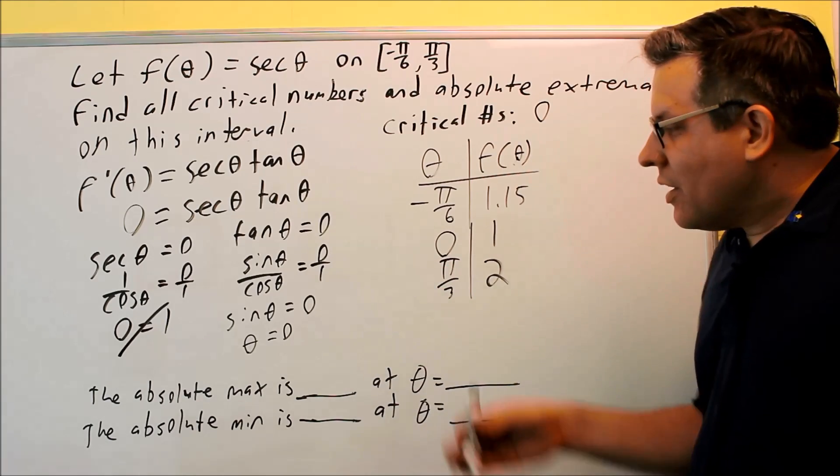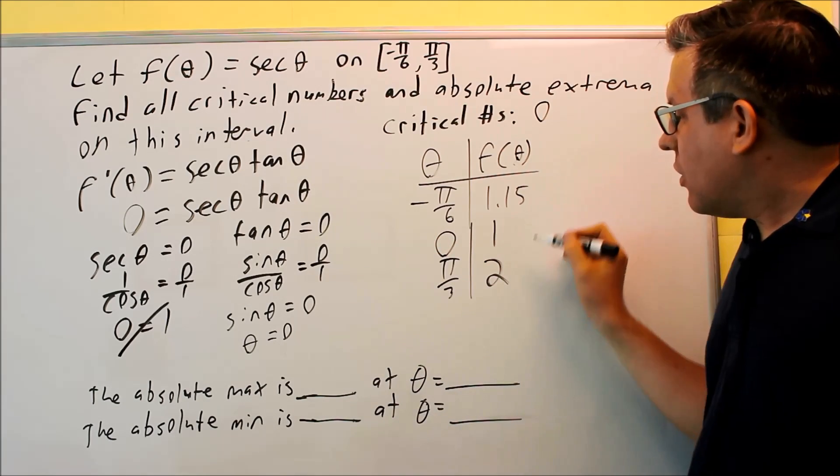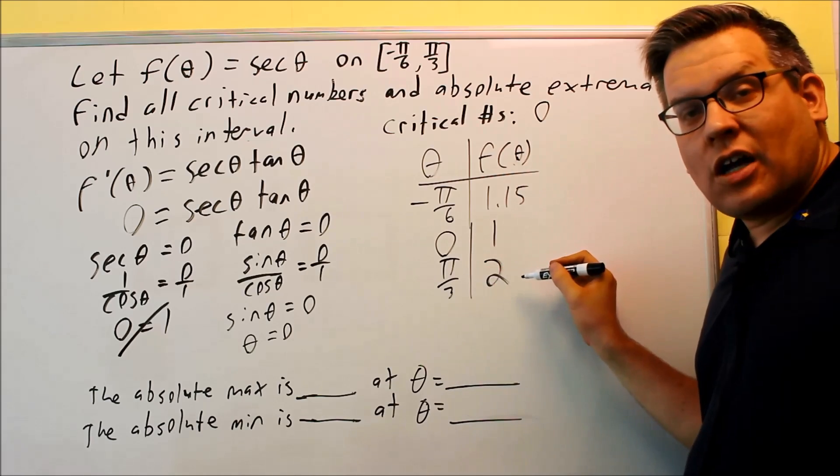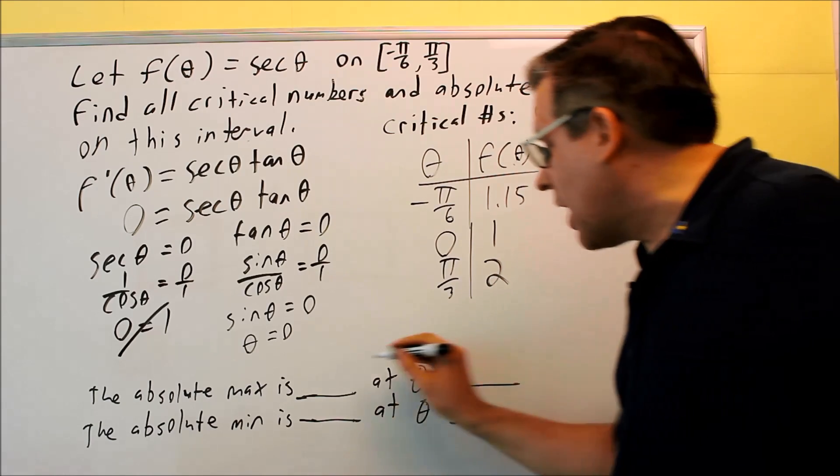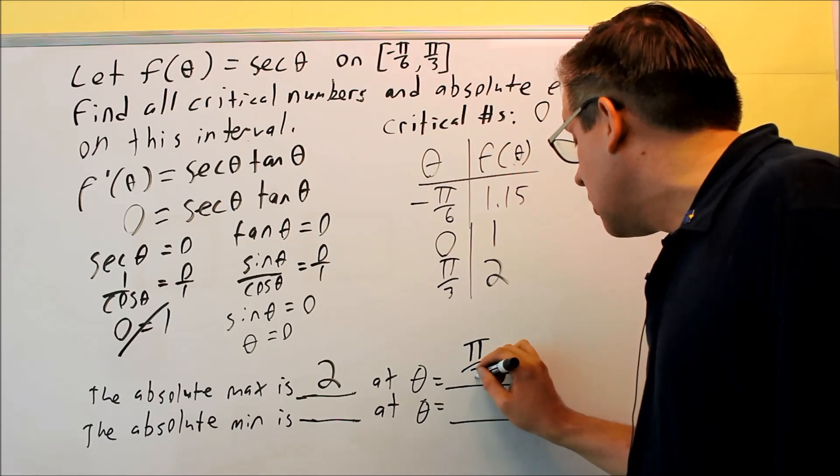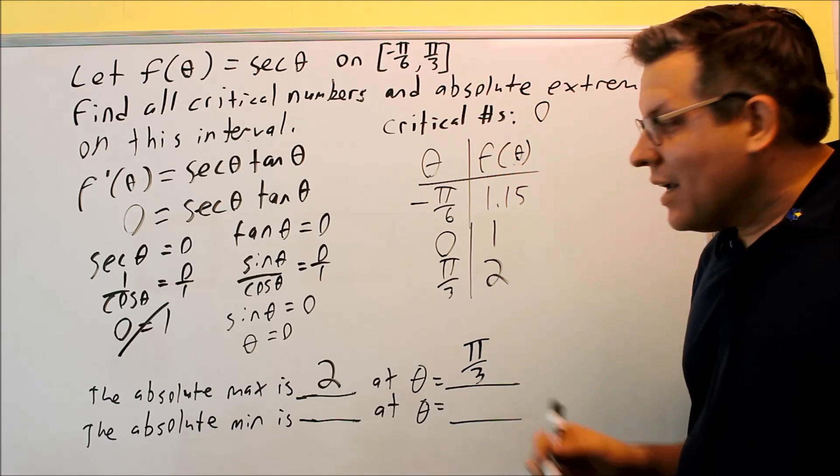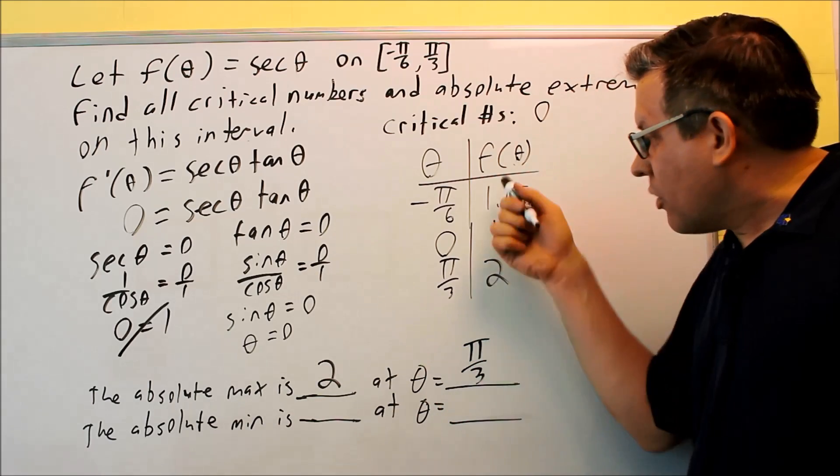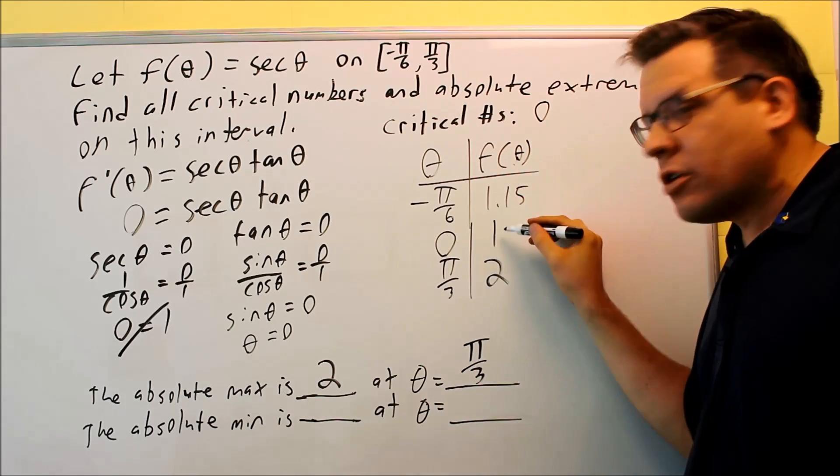We just need to write our answer. The absolute max is going to occur at the largest value that you see on this. The largest value, y value, is two. So the absolute max is two. That's going to occur at theta equals pi over three. And then the absolute min is the lowest number you see on this. The lowest number here is one.